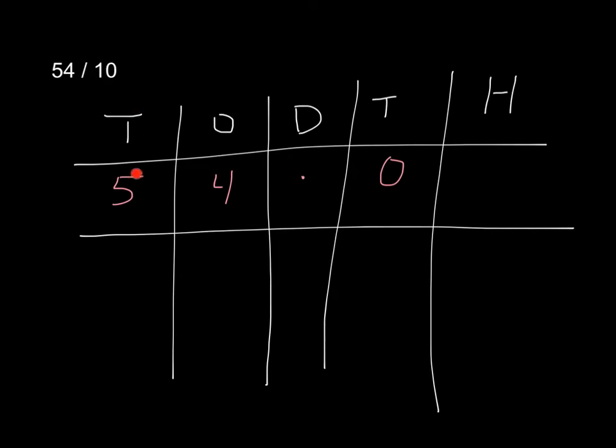If we put it on a place value chart, we have our tens, ones, decimal, tenths, and hundredths. I added in 0 because I know I have 0 tenths, but that helps me when I look at the decimal.